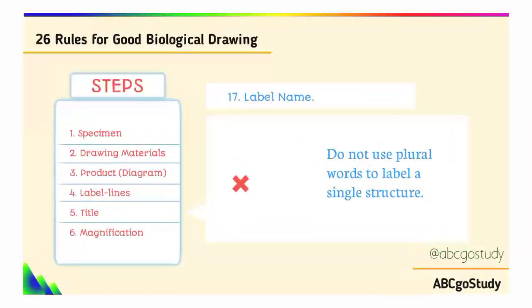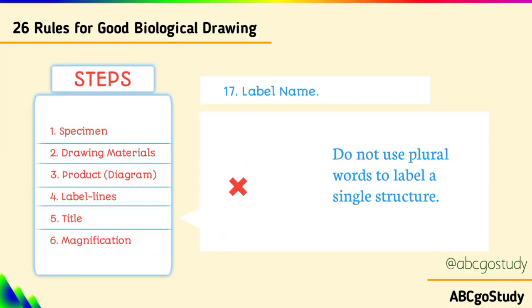Number seventeen, label name: examiners are testing whether you use singular or plural form. Since you are identifying a single part, use the singular form. Plural is used for something that is more than one, so always use the singular form of that very part name when labeling.